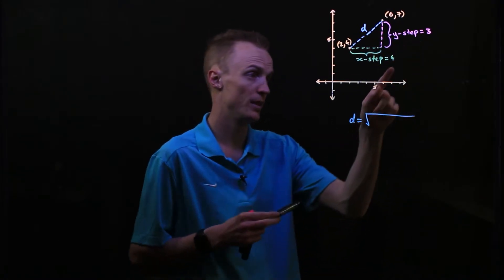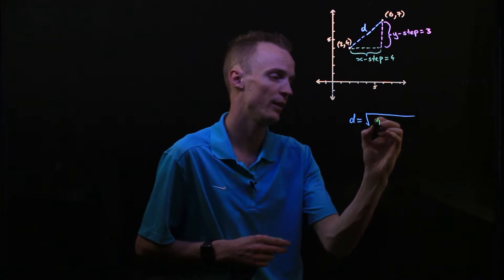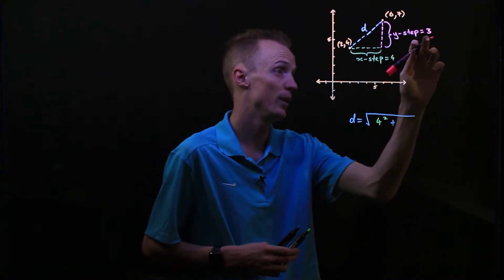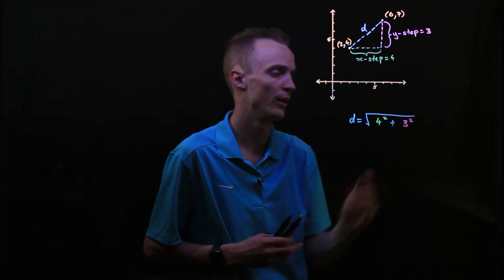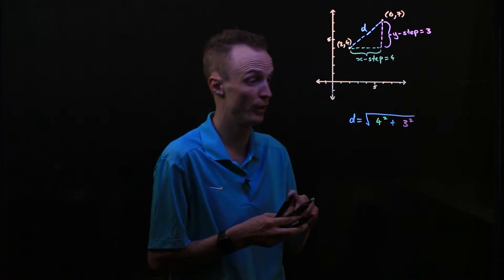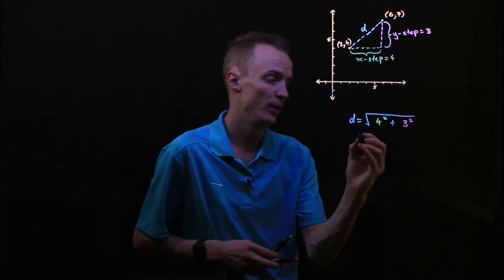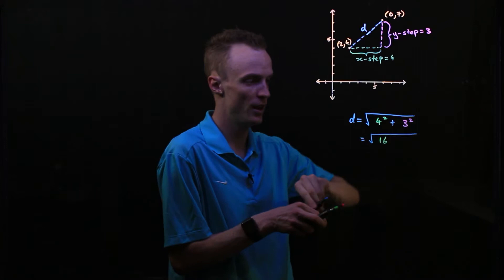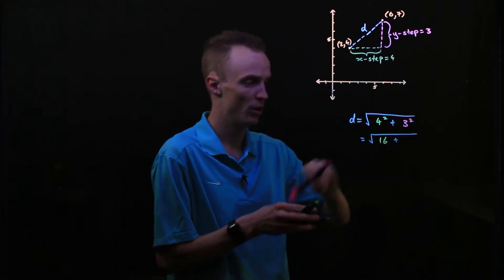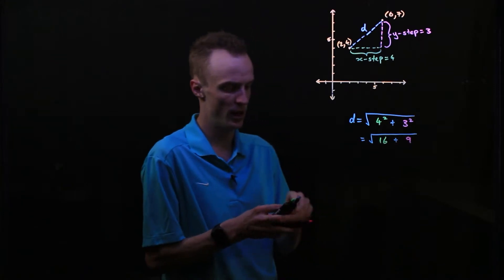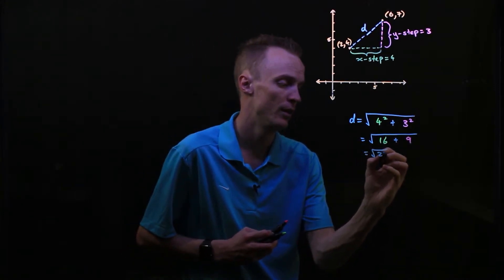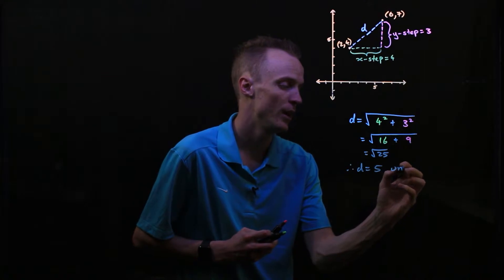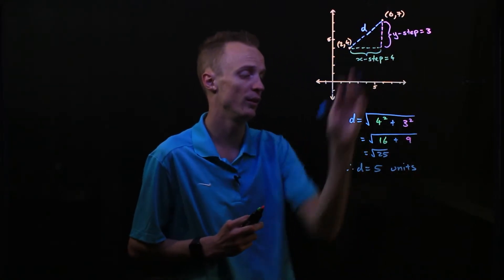Our x-step is equal to 4, so we have 4 squared, and our y-step was 3, so we add 3 squared. This is equal to the square root of 4 squared, which is 16, plus 3 squared, which is 9. Now 16 plus 9 equals 25, and the square root of 25 is equal to 5. So we've found that the distance between these two coordinates is 5 units.